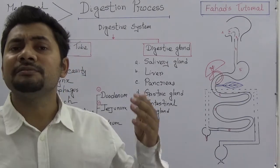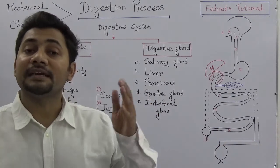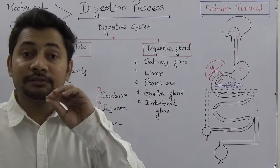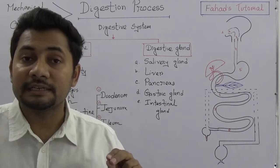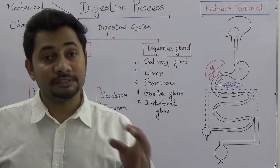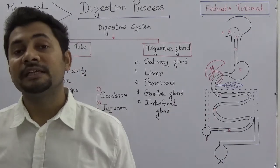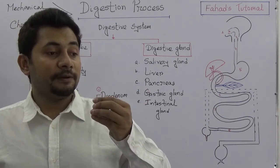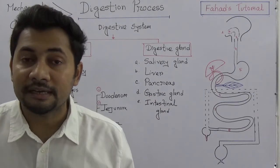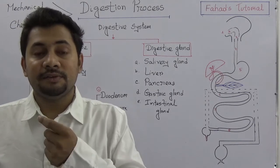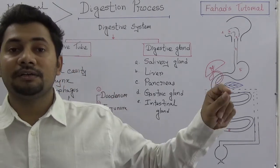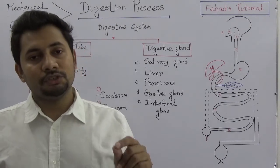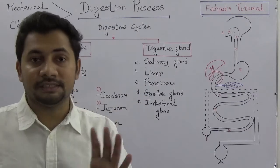Glands may be unicellular or multicellular, or you can say endocrine glands and exocrine glands. Endocrine glands secrete hormones and are called ductless glands because they don't have any duct — they directly secrete hormones into the blood, which then work on specific organs. Exocrine glands secrete enzymes and have a duct. There are differences between enzymes and hormones, which I will explain in upcoming videos.